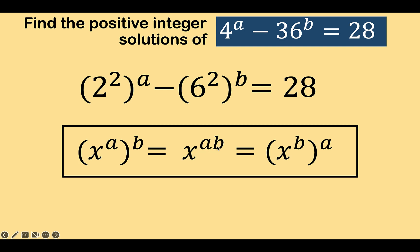But since multiplication is commutative, we can also write this as b times a. And getting its converse, we can rewrite this further as x raised to b all raised to a.